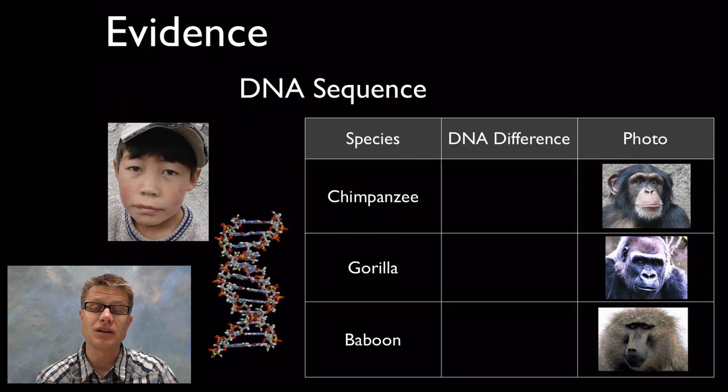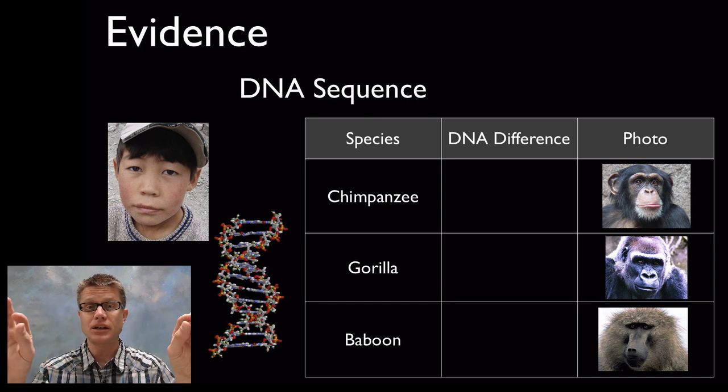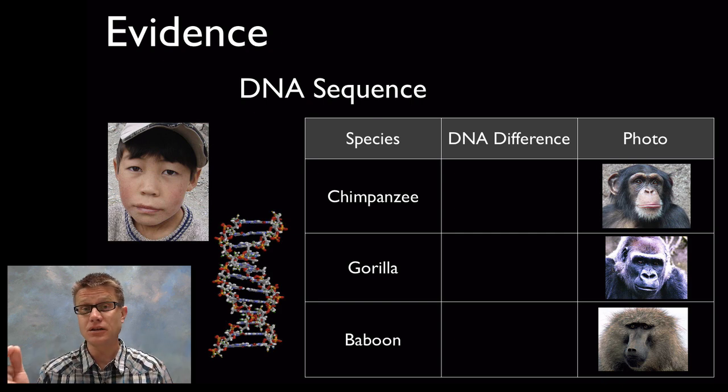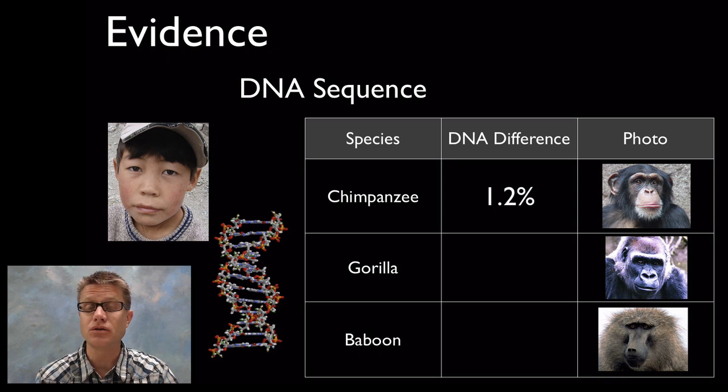A big piece of evidence we have today is molecular evidence, so DNA evidence. And if you look at the organisms on our planet that are most related to us, we can line up our DNA and we can compare it to their DNA. And if you line up human DNA and chimpanzee DNA, you'll find that there's only 1.2 percent difference in all of their DNA.